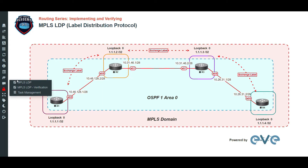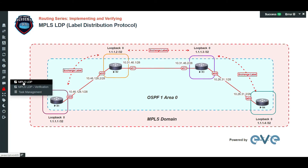You would see two options. You have the MPLS LDP and MPLS LDP verification. We must start all the routers and do basic connectivity tests to each other. What we can do here is to do a basic ping test from R1 to R2, R2 to R3, and Router 3 to R4.